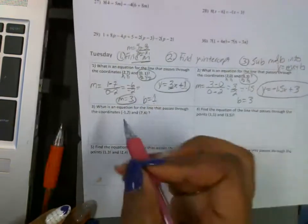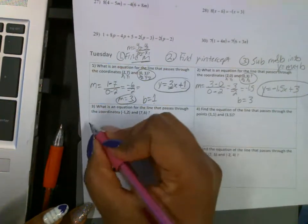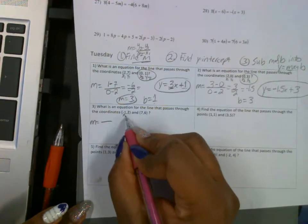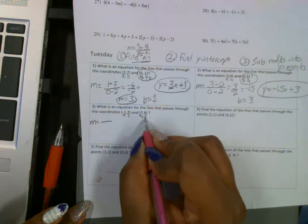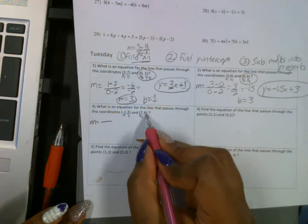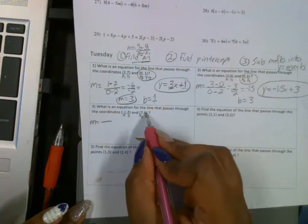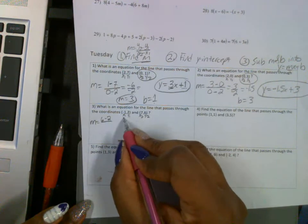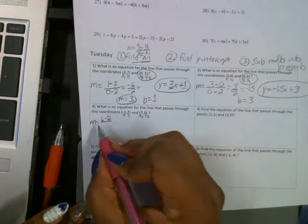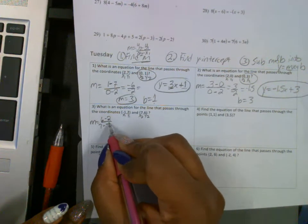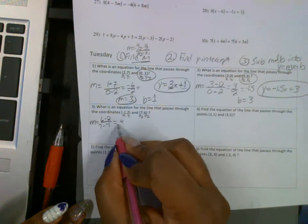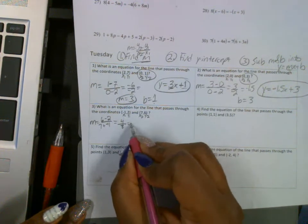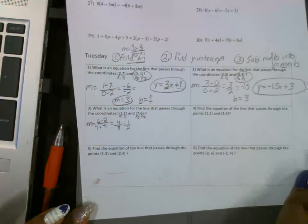All right, for this one, b is not given, so you're going to have to do a little bit more work. But let's find m first. x1, y1, x2, y2. y2 minus y1 on top, so that's 6 minus 2. x2 minus x1 on the bottom, so that's 7 minus negative 1. On the top, this gives me 4, and on the bottom, this gives me 8. So this is 1 half or 0.5.